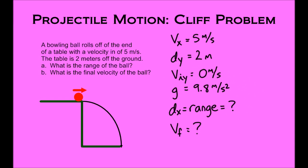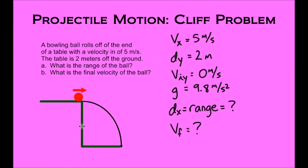As we start to solve the problem, we need to identify what we're given and what's being asked for. Vx, the velocity in the x direction, is 5 meters per second — that comes right out of the problem. Dy, the distance in the y direction, is 2 meters, also from the problem. Viy, the initial velocity in the y direction, is 0 meters per second — there's no initial velocity in the y direction. Little g, the acceleration due to gravity, is 9.8 meters per second squared. The problem asks for the range of the ball, which is dx, and VF, the final velocity as the ball reaches the bottom.